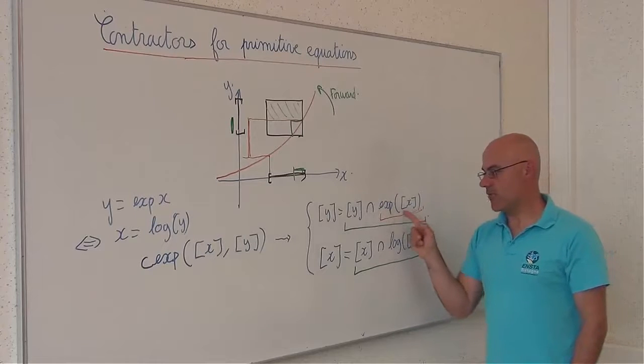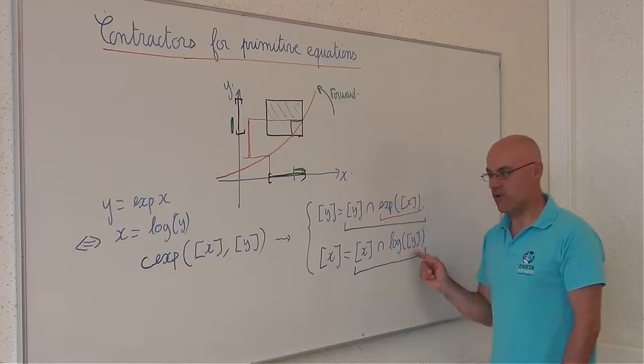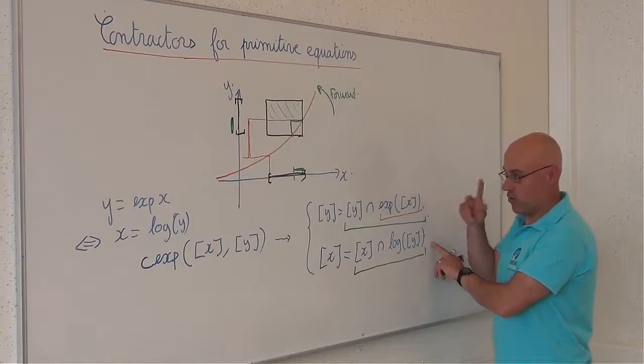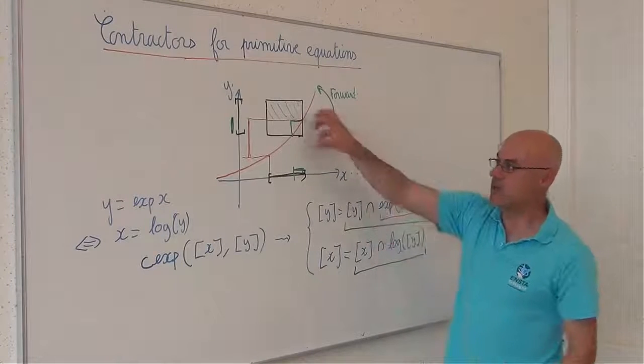Again, I have to use interval arithmetic to compute the exponential and the logarithm of the interval. And applying twice these two operations, twice interval arithmetic, then I will obtain the optimal contractor.